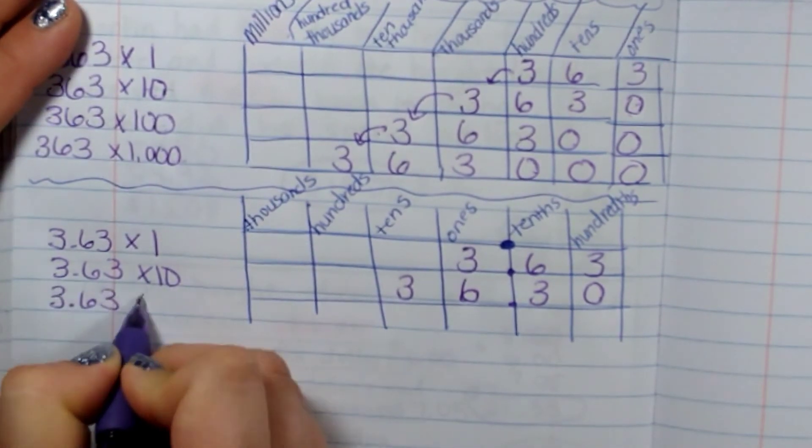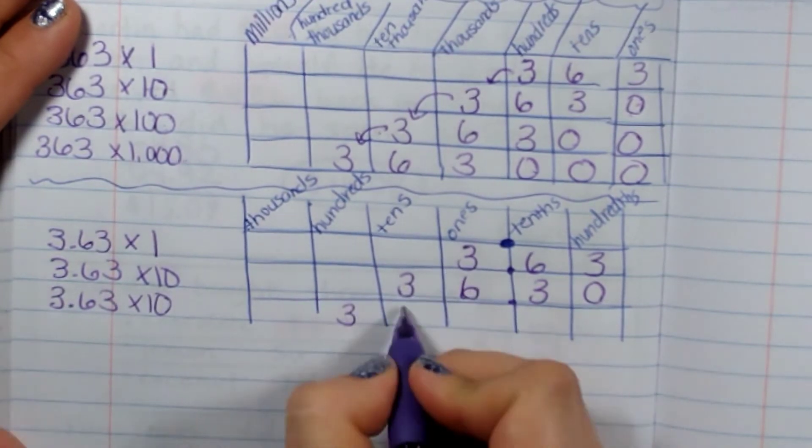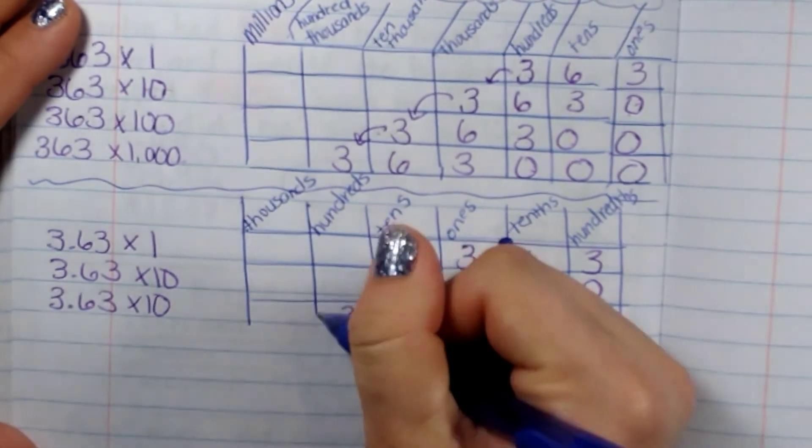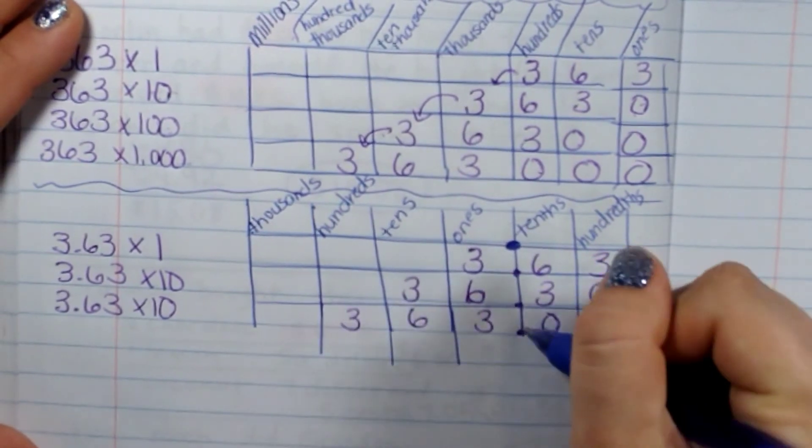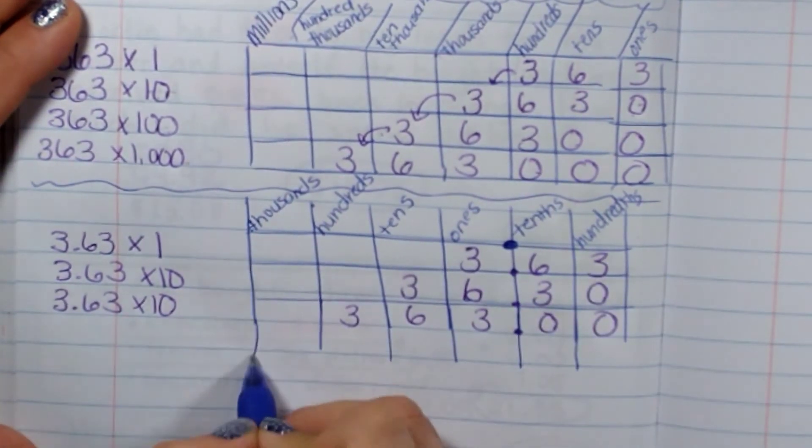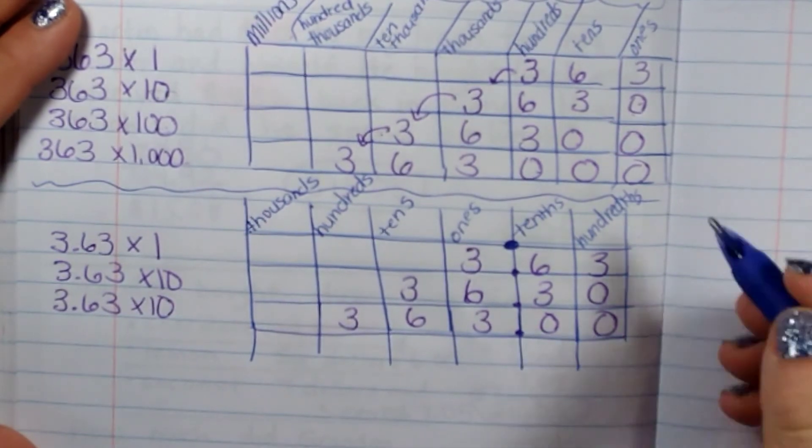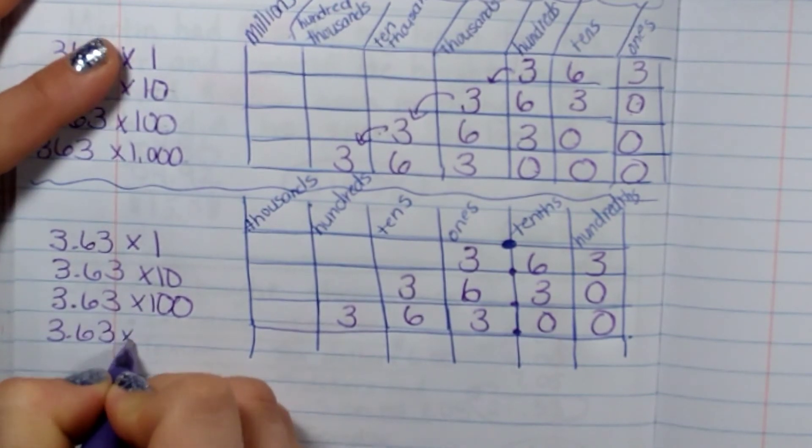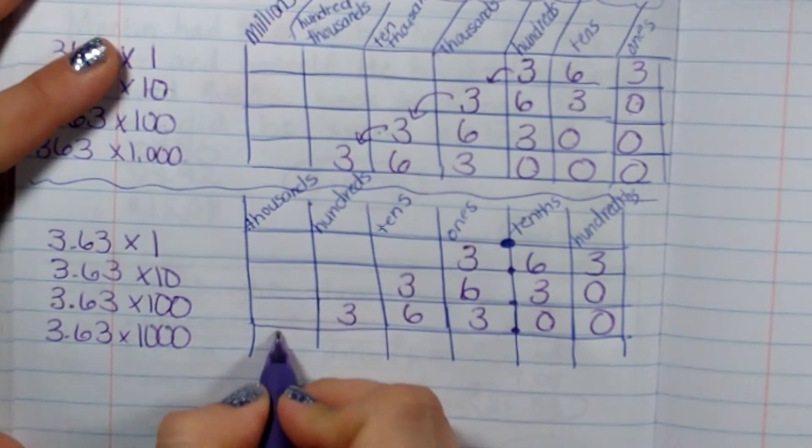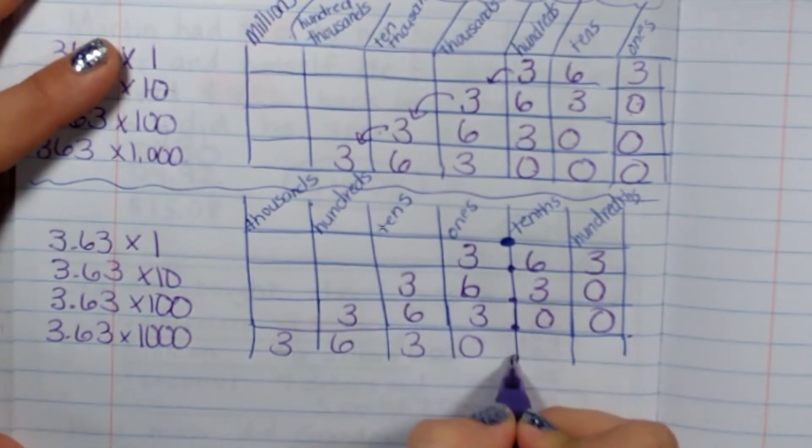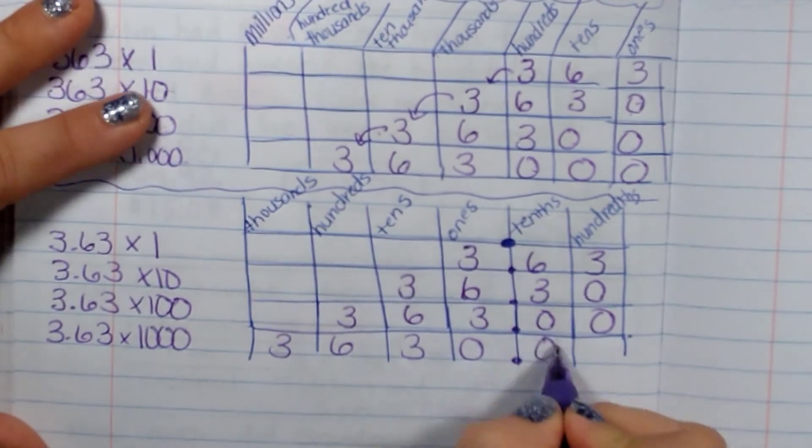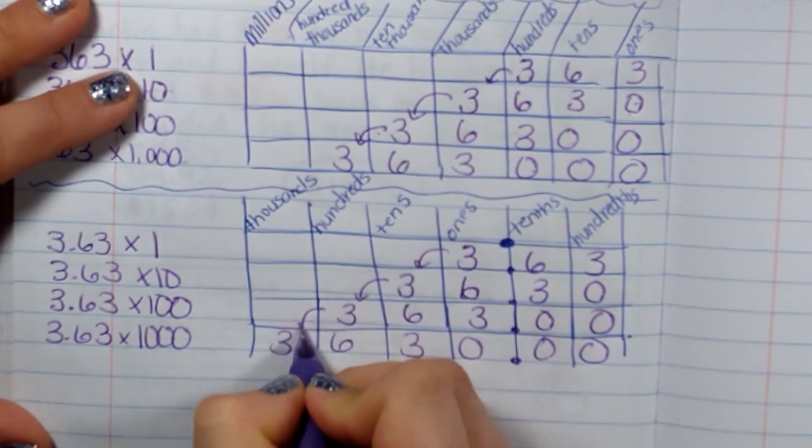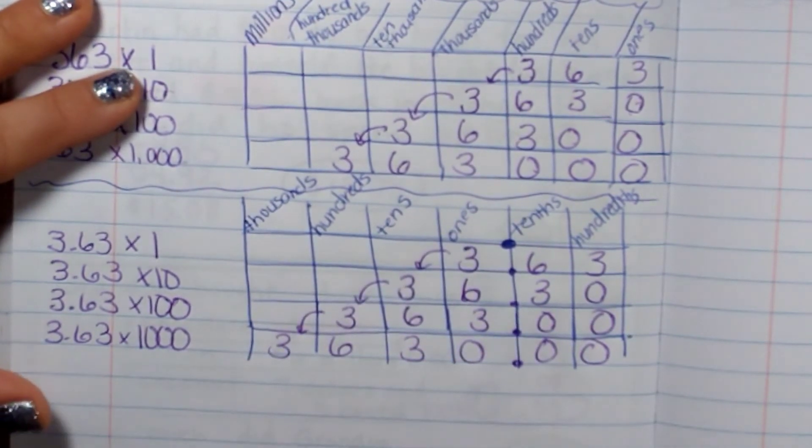If I was to multiply it by a hundred, I would move it over again. We're actually going to go down one more. Let's see if you can guess what it would be. Oops, that's a hundred. If this was a thousand, it would be 3630. So we're moving it over one each time. So these are the patterns that we're going to be focused on.